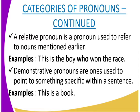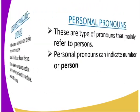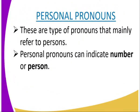The next category is demonstrative pronouns. Demonstrative pronouns are used to point out something specific within a sentence — from the word 'demonstrate.' For example: 'This is a book,' 'That is a boy,' 'That is a chair.' Words like 'this,' 'that,' 'these,' and 'those' point to specific things.